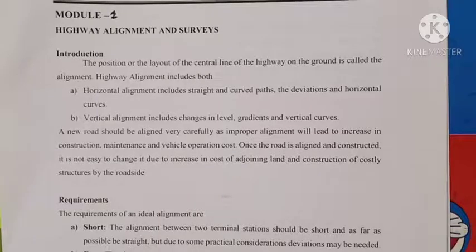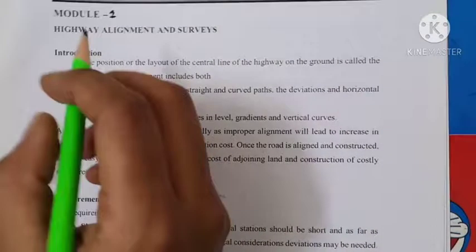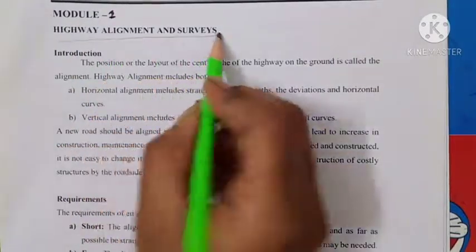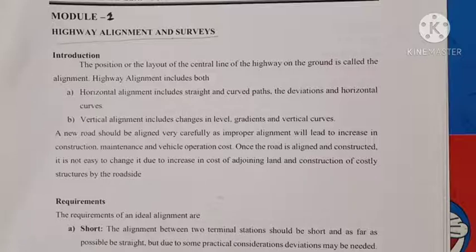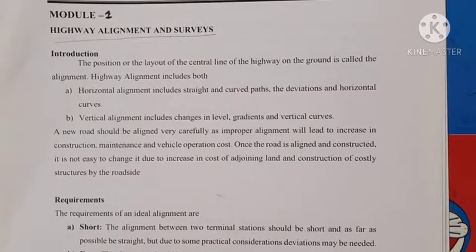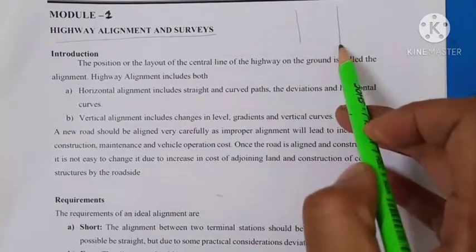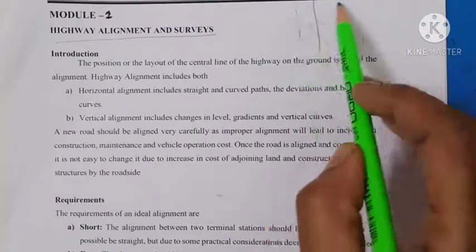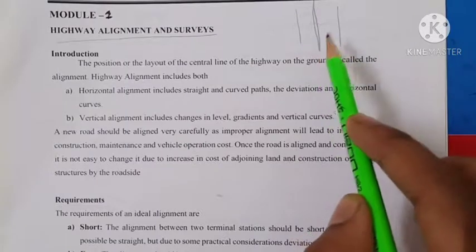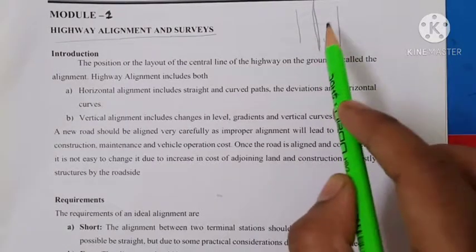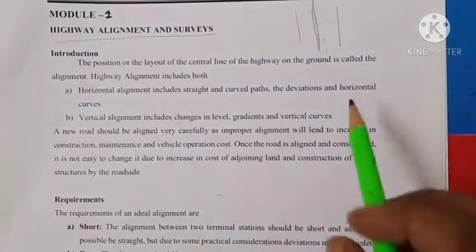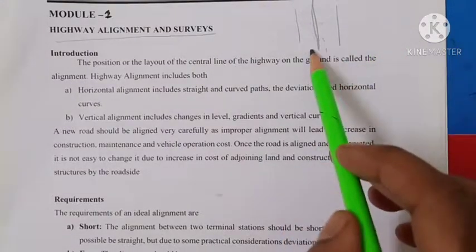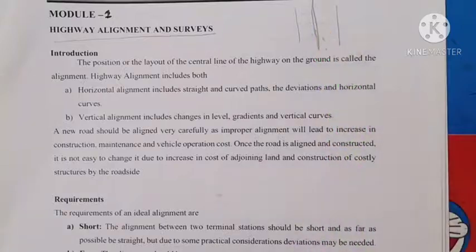In this session, we will see the last part of module 1, that is highway alignment and survey. Highway alignment refers to the position or the layout of the center line of the highway on the ground. Whenever we plan a highway, there will be a center line, and the position of this center line is called alignment.